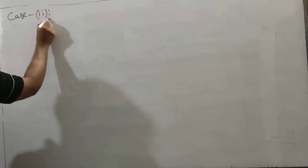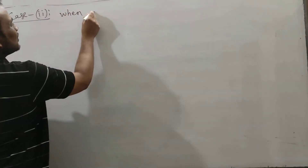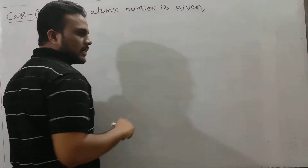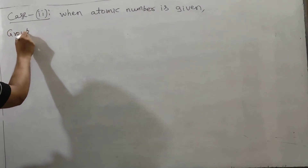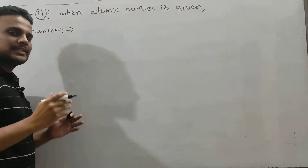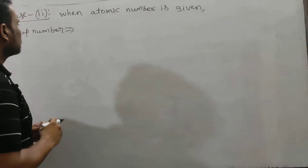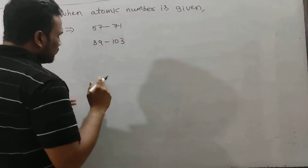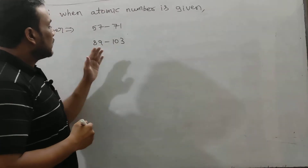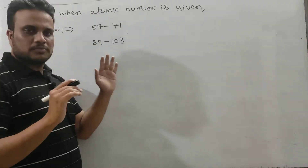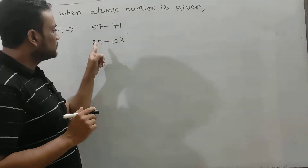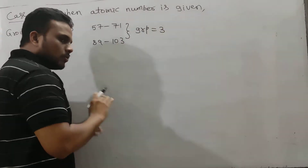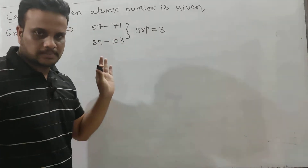What is case 2? When atomic number is given, then how to calculate group number? First you have to see what is the given atomic number. If the atomic number is between 57 to 71 and 89 to 103 — we know 58 to 71 and 90 to 103 are F-block elements, 14 plus 14 equals 28 F-block elements. 57 is lanthanum and 89 is actinium. These two elements also belong to group number 3. So for atomic numbers 57 to 71 and 89 to 103, group 3 is fixed.